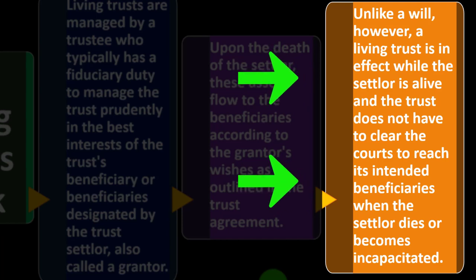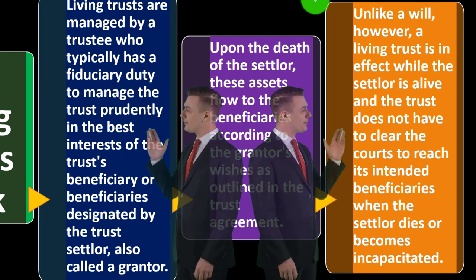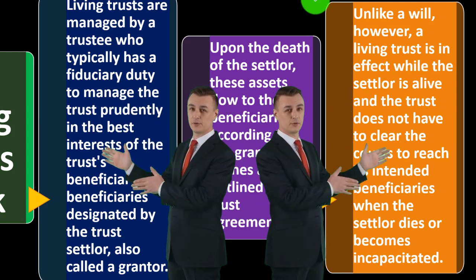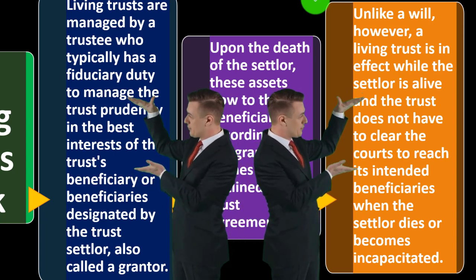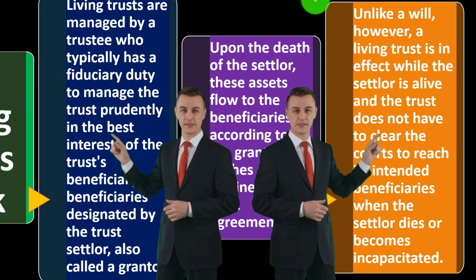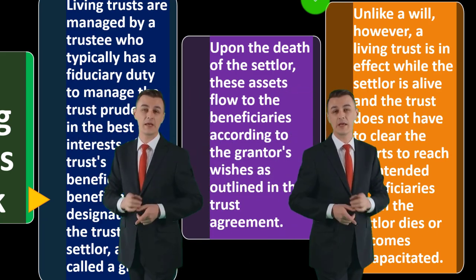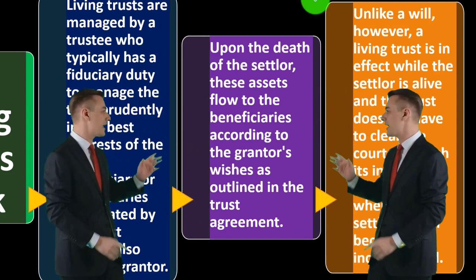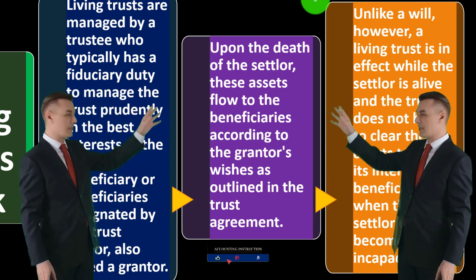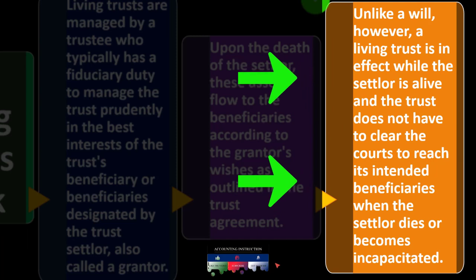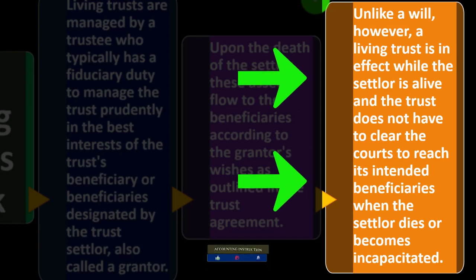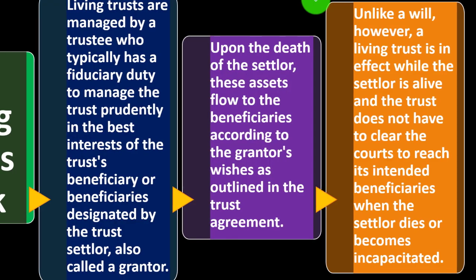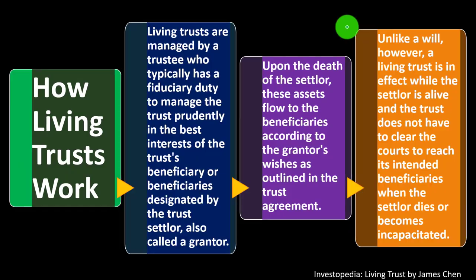Because the trust holds the assets, it has its own rules for what happens at the point of death — essentially functioning like the will component of the living trust. By packaging assets into the living trust before death, you avoid the probate process. However, you do incur legal costs associated with transferring assets into the trust. Again, if your assets are limited, a simple will may suffice; for more complex situations, a living trust is worth considering.